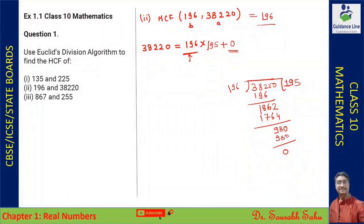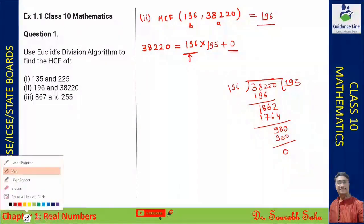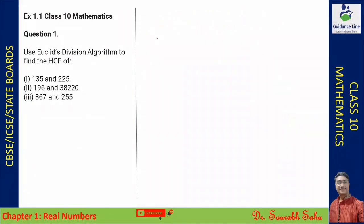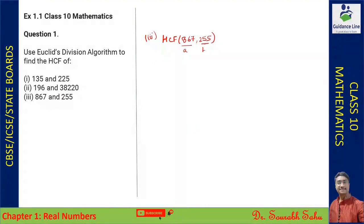Now we have the third problem. In this case, we have to find the HCF of 867 and 255. Here 867 is a and 255 is b.